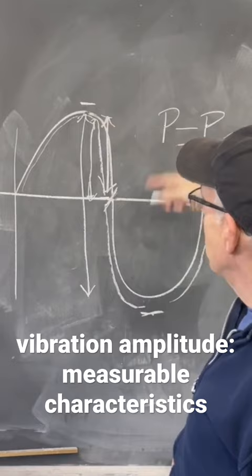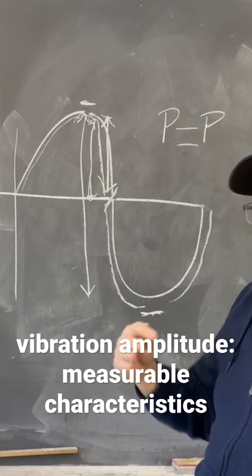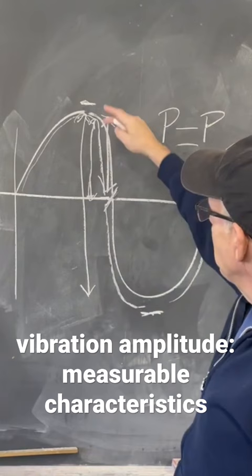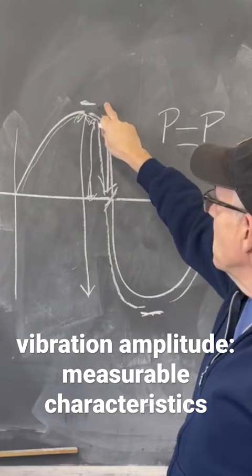When displacement and acceleration are always the same, they match up with each other, velocity is always the exact opposite. So when we get to the extremes here in our sine wave, maximum acceleration, maximum displacement, zero velocity.